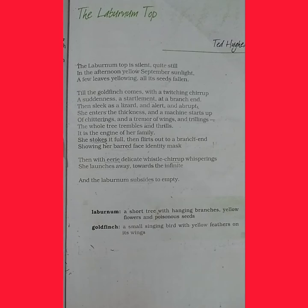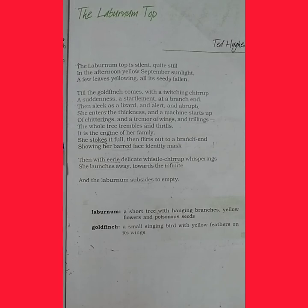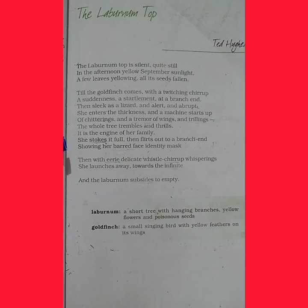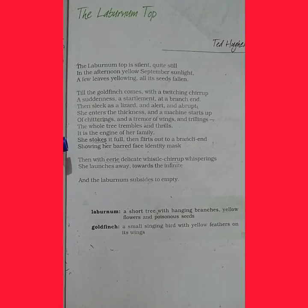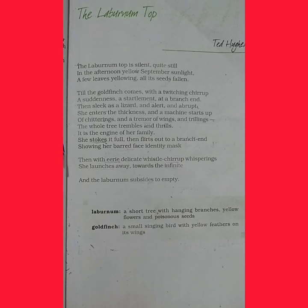'It is an engine of her family.' This refers to the goldfinch — she serves as an engine of her family. 'She stokes it full' — stoke means to add fuel to the machine. Then she flirts out to a branch end — flirts means flutter — after feeding her family she flutters to a branch end, showing her barred face identity mask. Her face, which was earlier obscured, becomes visible, revealing her identity through the stripes on it.